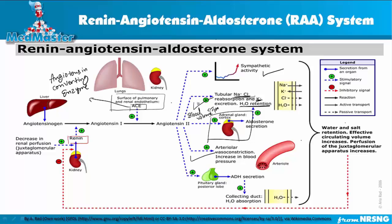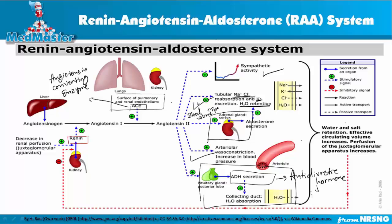The final effect of angiotensin 2 is on the collecting ducts of the kidney, which is the main site where water excretion or reabsorption occurs. Angiotensin 2 goes to the pituitary gland and increases the secretion of ADH, also called anti-diuretic hormone. ADH increases water reabsorption in the kidney, increases blood volume, and that's how the kidneys get reperfused.